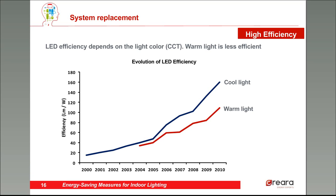Light color is one of the factors to consider in efficiency. Warm light is less efficient than cool light in LEDs, as shown in this graph. This is a limitation, especially in residential settings where it's preferable to have warm light. In other applications like restaurants or hotels, warm light is also interesting. But for example, in a hospital or in public lighting, it's preferable to have cool light.